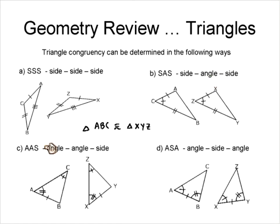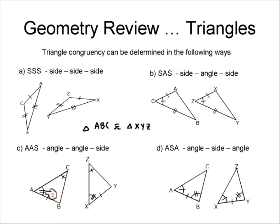Another congruency property is Angle-Angle-Side (AAS). Starting at vertex C, we go angle, angle, side. Notice you always go either clockwise or counterclockwise — you can't jump around. So starting at C: angle, angle, side on both triangles. Those triangles are congruent by Angle-Angle-Side.